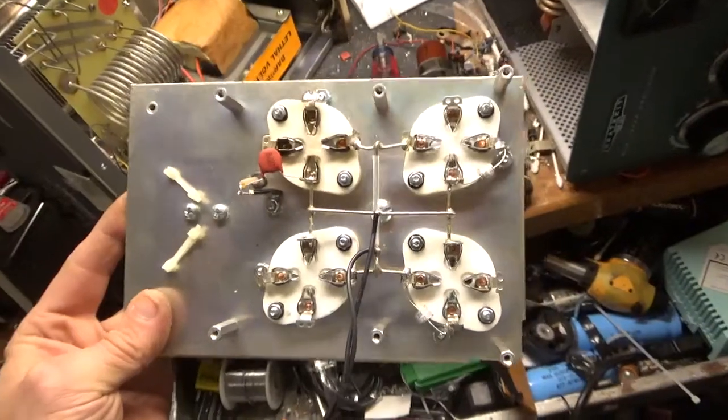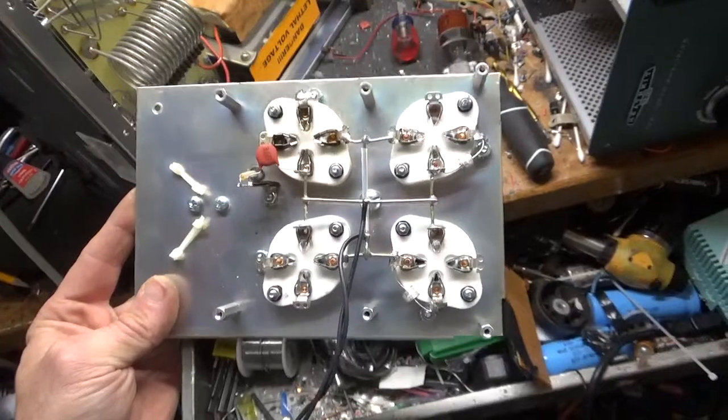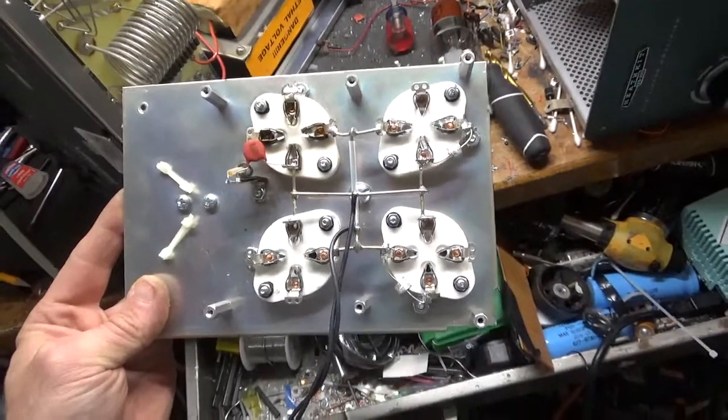Okay, I'm back. Took the assembly out, grounded each grid connection. There's one grid connection per tube socket.